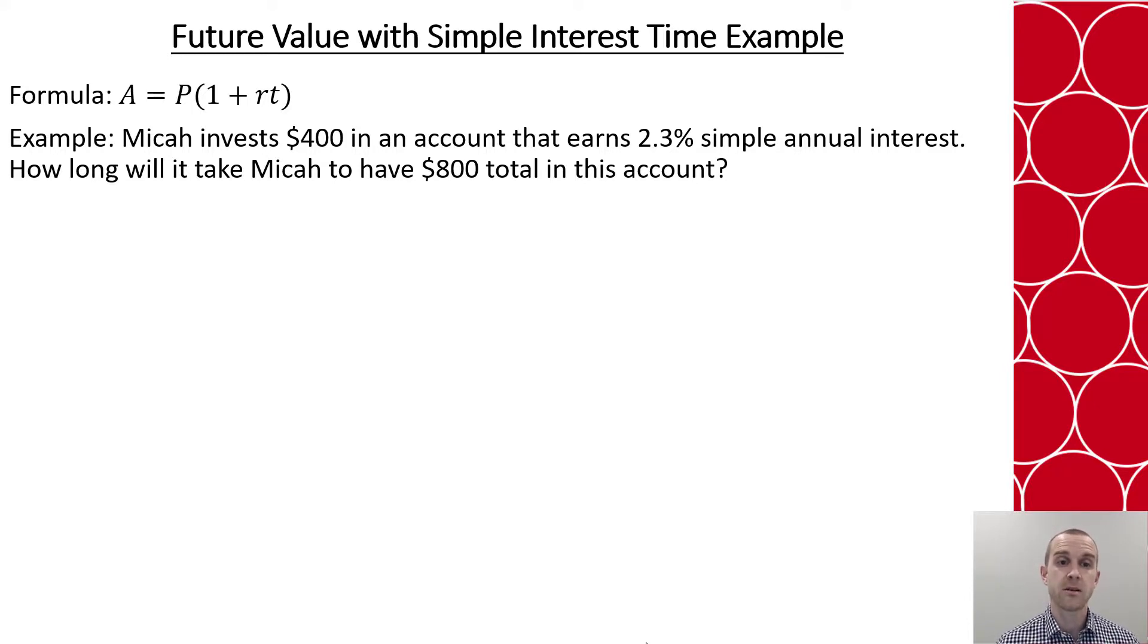Now we look at what we have. We know what we want in the account eventually, which is the $800 total. We know where we start, where Micah started with an investment of $400.